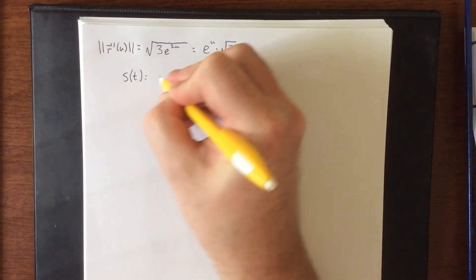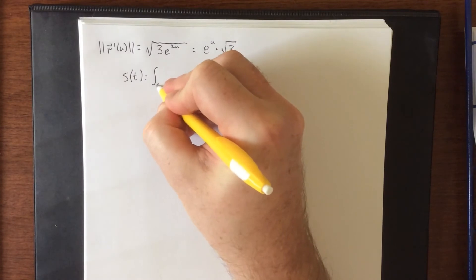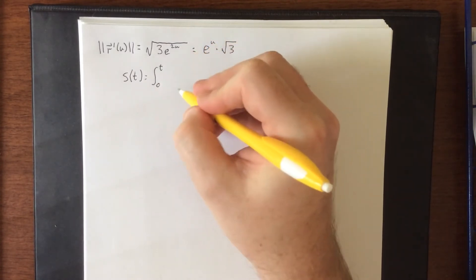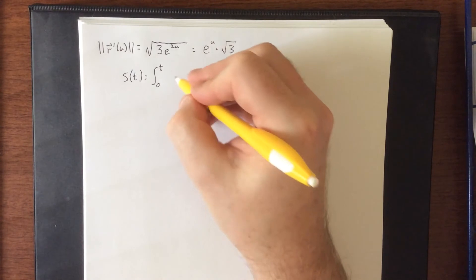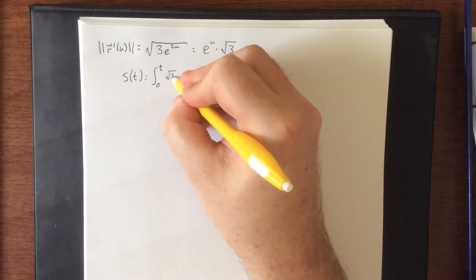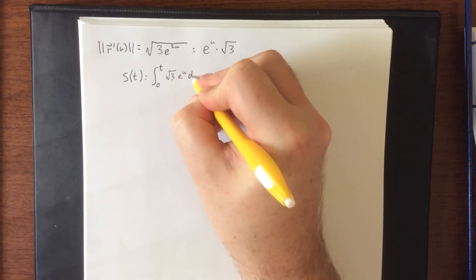So put this back into the context of what we're doing. Our arc length function is going to be the definite integral from the given starting point, which was t equals zero, up to t of this function. So square root of three, e to the u, du.